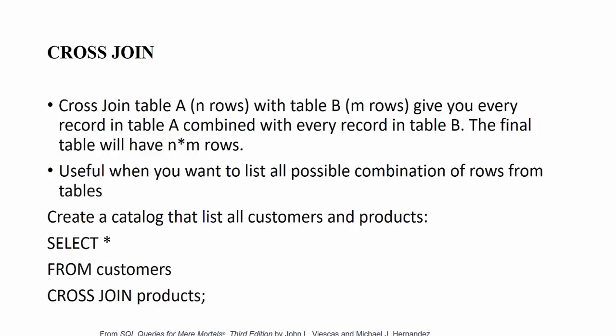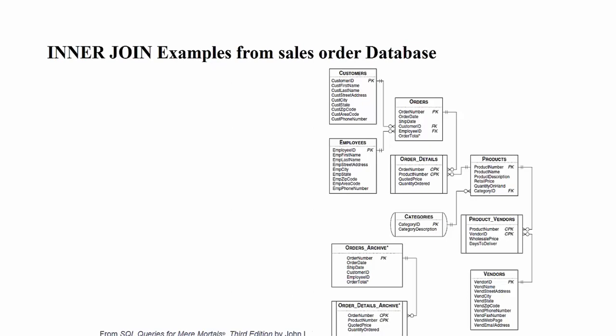It is very important to pay attention to the type of join you want to use, because inner join, right join, left join, and the combination of right and left joins each provide different information. Coming back to the sales order database, we have sales order and product tables connected through primary and foreign keys. Understanding each connection is essential to get the required information.